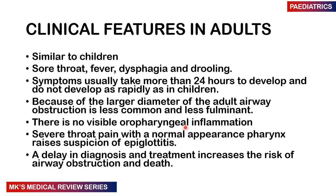Clinical features in adults are similar to children — sore throat, fever, dysphagia, and drooling — but symptoms usually take much longer, more than 24 hours to develop, as adults have a larger airway diameter. Airway obstruction is therefore less common and less prominent. There may be severe throat pain with a normal appearing pharynx, which should raise suspicion of epiglottitis. A delay in diagnosis and treatment increases the risk of airway obstruction and death in adults.